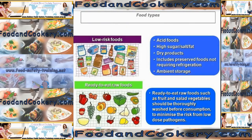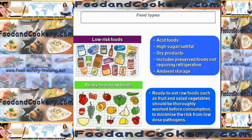Low risk foods include acid foods, foods with high sugar, salt, or fat content, and dry products. This includes preserved foods not requiring refrigeration and foods which you can keep at ambient storage or room temperature. These are classed as foods which will not support the growth of pathogenic microorganisms. Ready-to-eat raw foods such as fruit and salad vegetables should be thoroughly washed before consumption to minimize the risk from low dose pathogens, which we'll look at later under foodborne diseases.